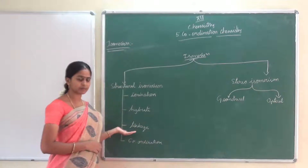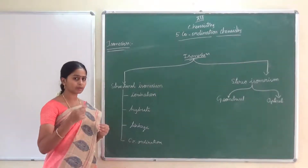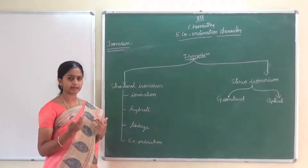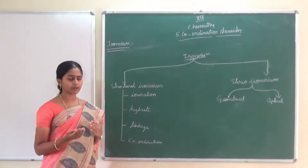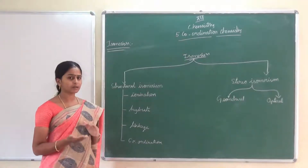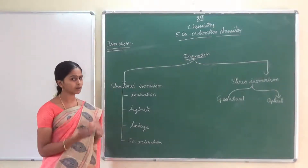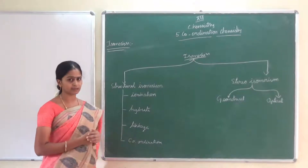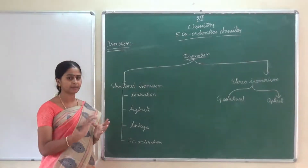Next is linkage isomerism, exhibited by an ambidentate ligand. Ambidentate means a single ligand can form more than one bond — in more than one direction. For example, NO₂ can act as a ligand. It can form a bond through nitrogen as well as through oxygen. It is monodentate — it forms only one bond at a time, either through the nitrogen side or the oxygen side. So the isomerism arises from which atom the ligand uses to bind to the central metal atom. That is called linkage isomerism.